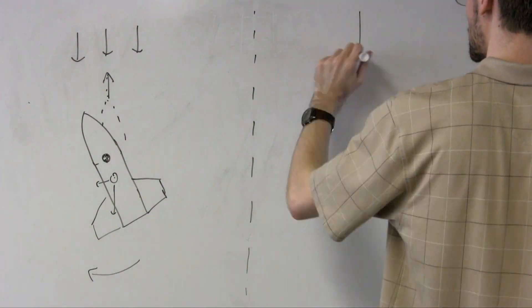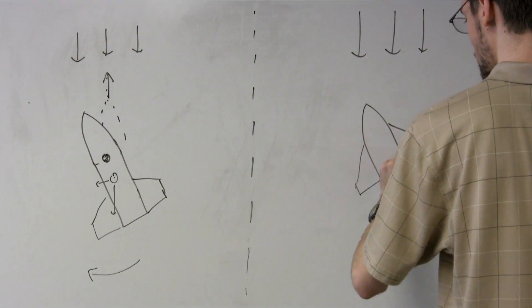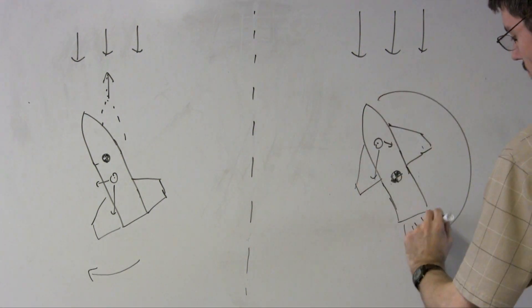On the other hand, if the CP is in front of the CG, the aerodynamic forces will try to flip the rocket over to fly tail first, while its thrust pushes it nose first, which causes instability and tumbling.